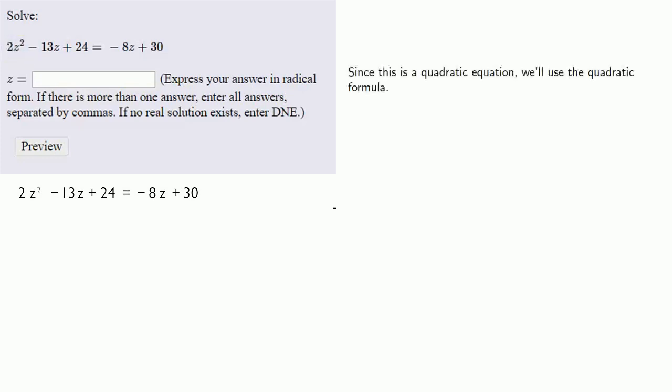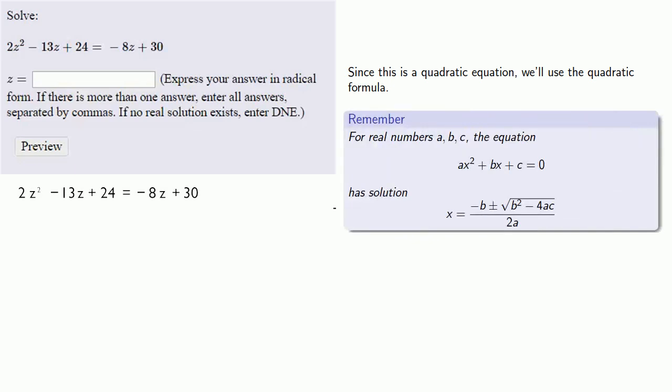And since this is a quadratic equation, we'll use the quadratic formula. Now, the owner's manual for the quadratic formula does require that we have our equation equal to 0. And so for our first step, we need to get all the terms onto one side of the equals.